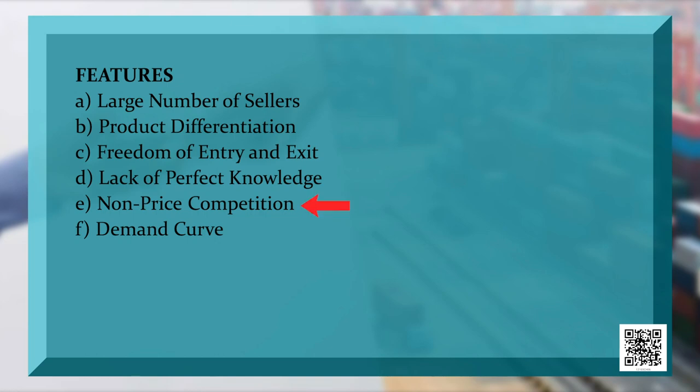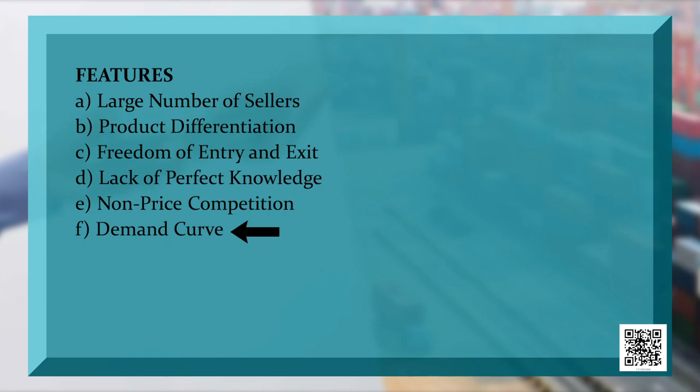Another feature is non-price competition. It means products are competing with each other not on price but on features. This is called USP — Unique Selling Proposition — where a firm highlights its particular feature to sell the product in the market, thereby increasing its market share. The last feature is that the demand curve is elastic, meaning with a change in price, the quantity demanded also changes.